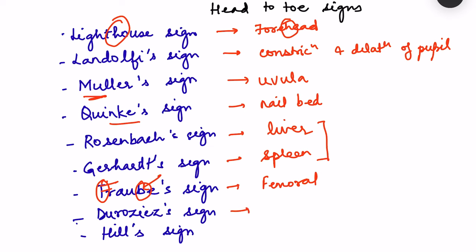Duroziez sign: auscultating the femoral artery with the bell of the stethoscope while lightly compressing it reveals a to-and-fro murmur. Hill sign: popliteal blood pressure is more than 20 mmHg higher than brachial artery pressure. Normally lower limb BP is slightly higher, but in AR the runoff effect makes the difference much greater — over 20 mmHg between popliteal and brachial pressures.